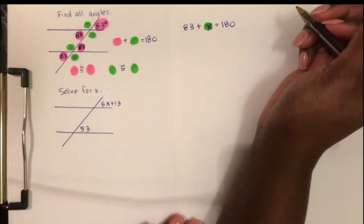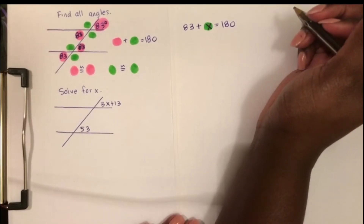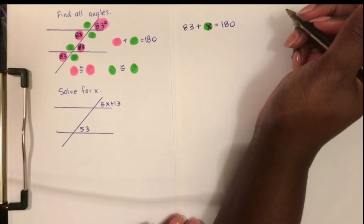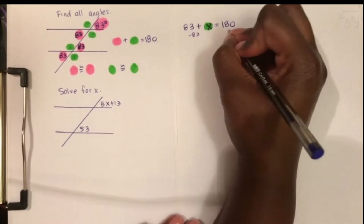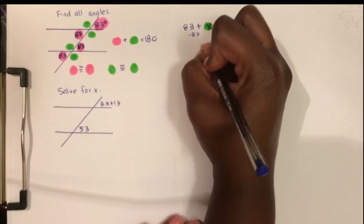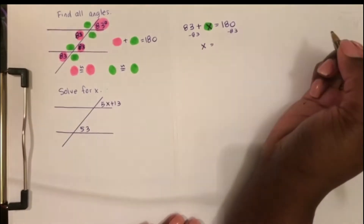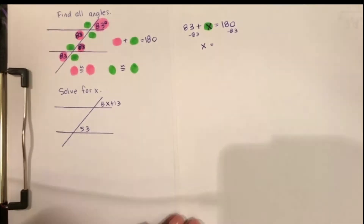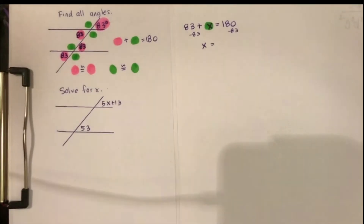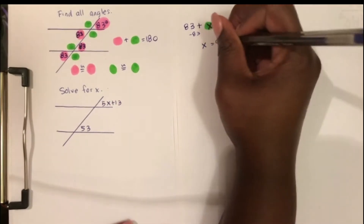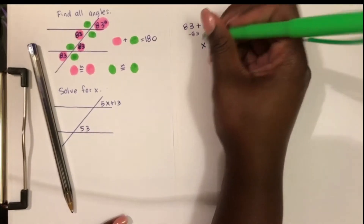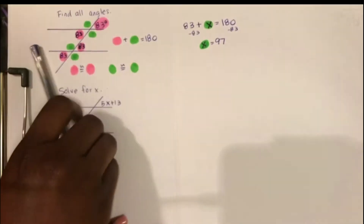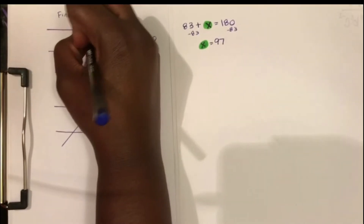That gives us a basic one-step equation to solve. We're going to do 180 minus 83 — subtract 83 from both sides — and that's going to equal 97. So all of our green angles are equal to 97. I'll add that to my picture, and then we're done with the first example.